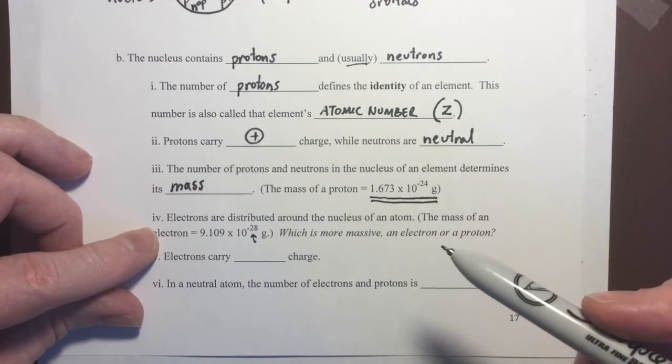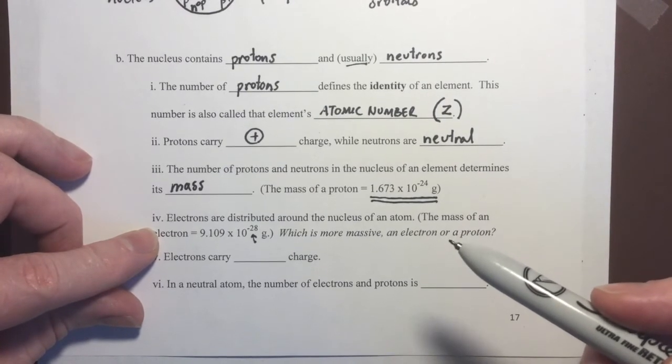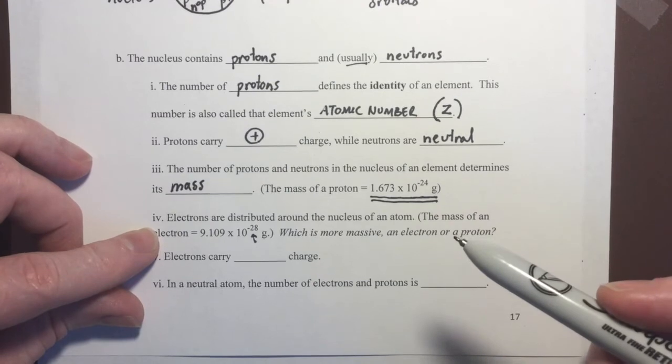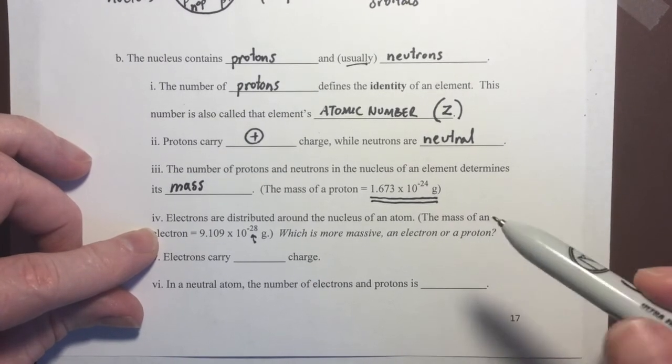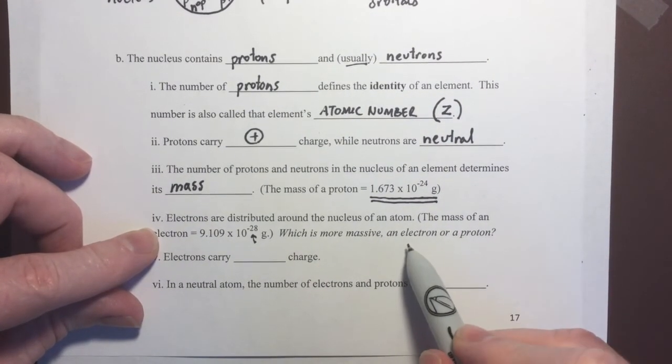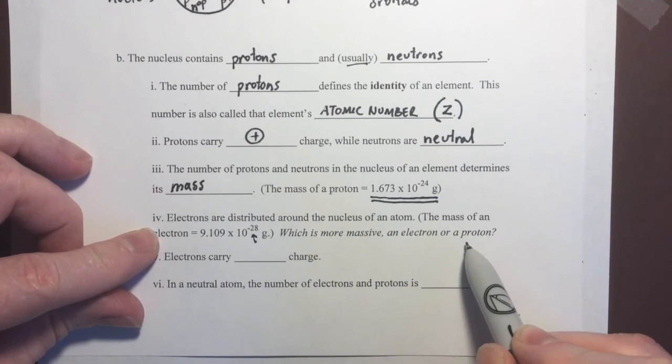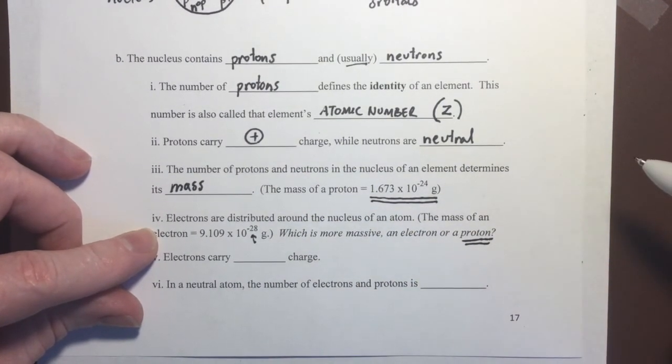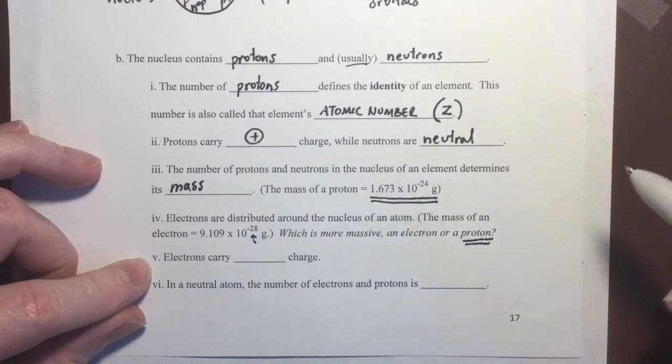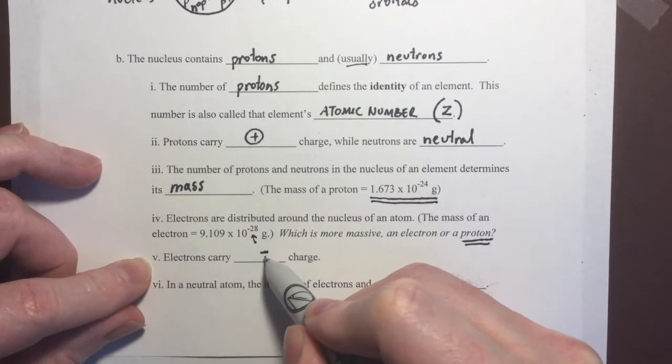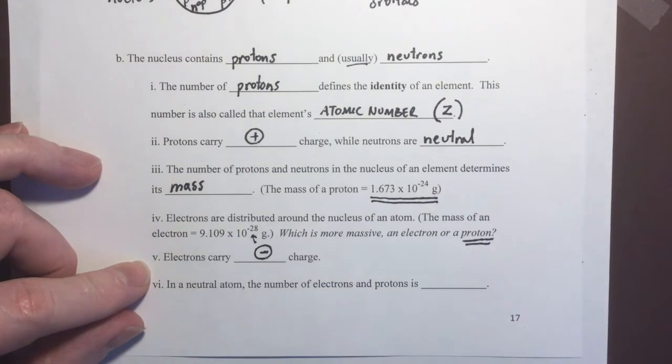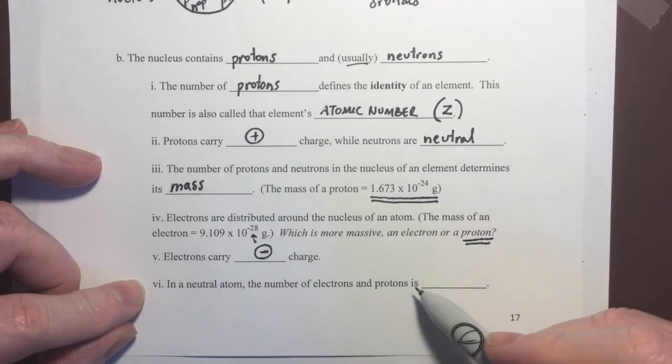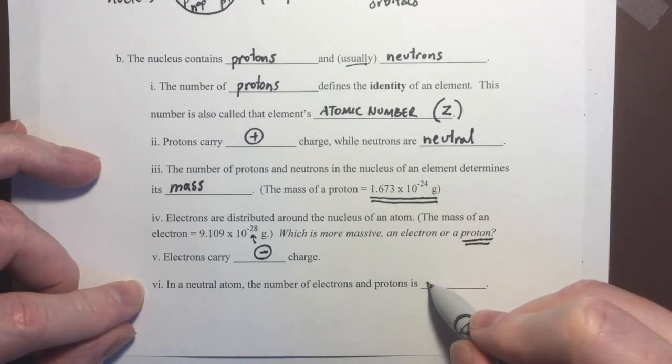So, yes, electrons do contribute mass to an atom, but they contribute very, very little mass compared to protons and neutrons. So, which is more massive, an electron or proton? A proton by about a thousand times. Electrons carry what charge? Electrons are negatively charged. And we know that in a neutral atom, the number of electrons and protons is equal.